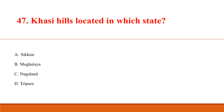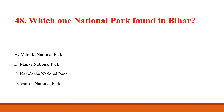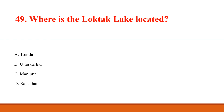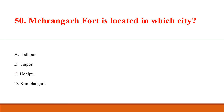Khasi Hills are located in which state? Answer D: Meghalaya. Which one national park is found in Bihar? Answer A: Valmiki National Park. Where is the Loktak Lake located? Answer C: Manipur. Mehrangarh Fort is located in which city? Answer: Jodhpur, Rajasthan.